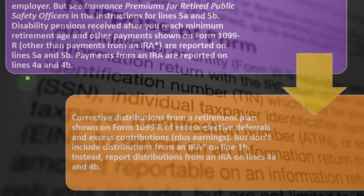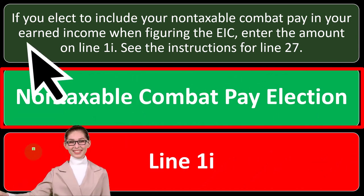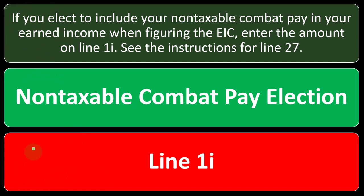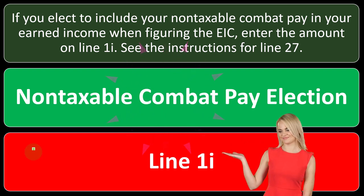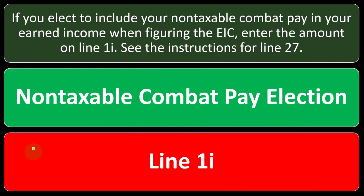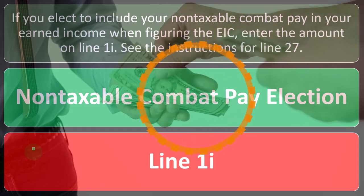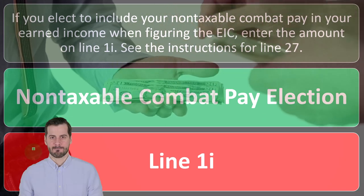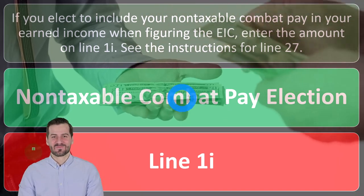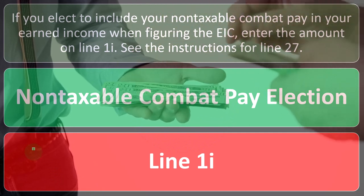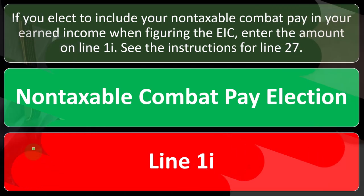Line 1i covers the non-taxable combat pay election. If you elect to include non-taxable combat pay in your earned income when figuring the earned income credit (EIC), enter the amount on Line 1i. This is another unusual situation: combat pay might be excluded from taxable income, which is generally beneficial. However, if including it in earned income would increase your earned income credit, the IRS allows you to elect to include it — since the EIC calculation can benefit from higher earned income up to a certain threshold.